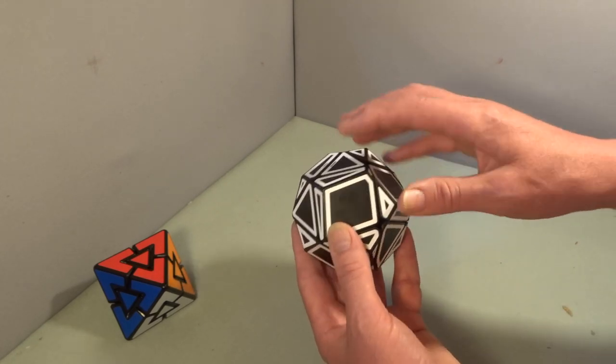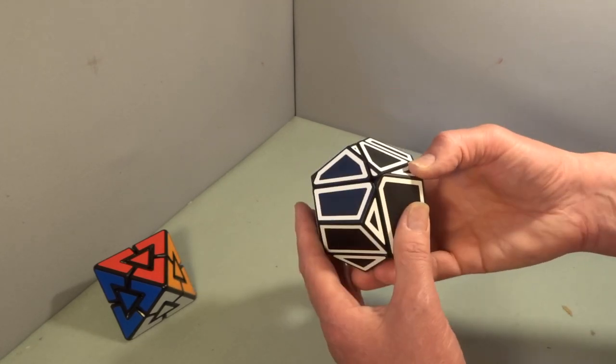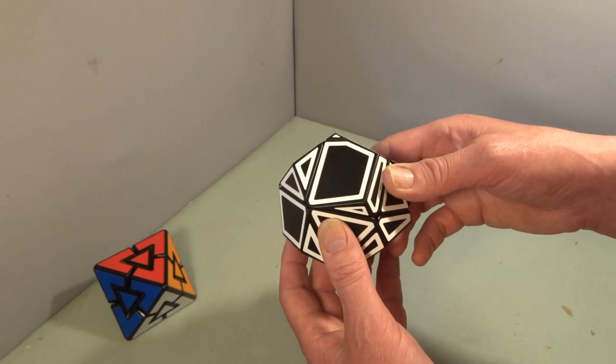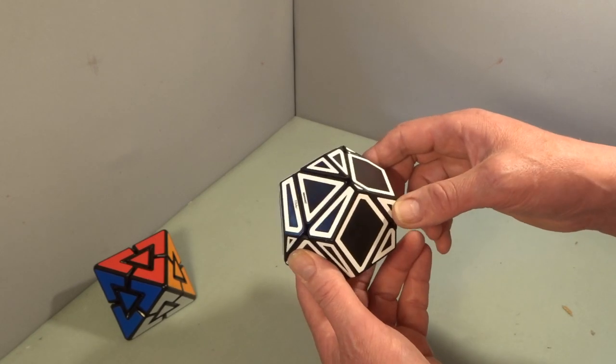So each piece is unique and of course the coloring doesn't help you know where things go so you can only solve it by shape alone.